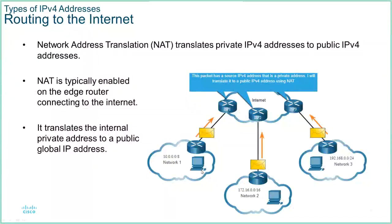NAT allows you to use private address spaces in your network and just have one public address on the outside interface, translating these addresses into that address as you send it out to your ISP — so it's a many-to-one translation. Documentation refers to it as NAT but it's actually NAT-PAT. Network address translation just translated an IP address for an IP address. PAT — port address translation — combined with NAT allows us to transform multiple IP addresses and applications to a single IP address on the outside.